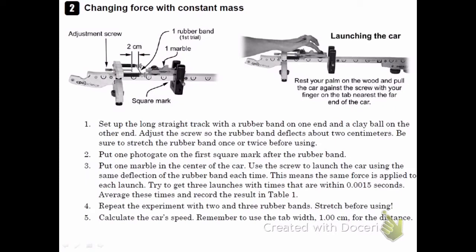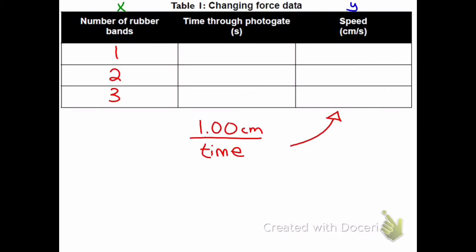In the first part of this lab, we were changing the force but keeping the mass constant, and that was this data table here where we changed the number of rubber bands. I'm going to use the data from the part 2 video, which showed that it took 0.0176 seconds to go through the photo gate. So you're going to do 1 centimeter, which is the width of the flag, divided by that time to get the speed.